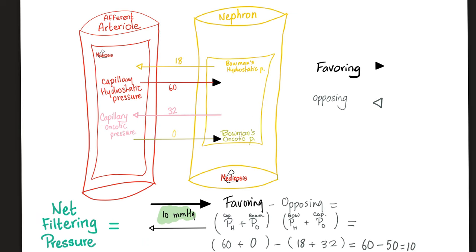Of these four pressures, which favor filtration and which oppose it? The forces favoring filtration — movement of fluid from capillary to tubule — are: number one, capillary hydrostatic pressure; number two, Bowman's oncotic pressure, which is zero. So 60 plus zero equals 60. The opposing forces are: number one, Bowman's hydrostatic pressure at 18; number two, capillary oncotic pressure at 32. That's 18 plus 32 equals 50. Net filtration pressure: 60 minus 50 equals 10 millimeters of mercury.